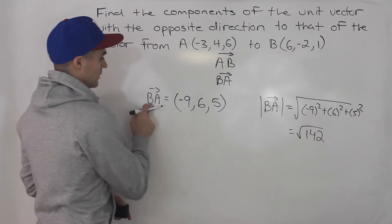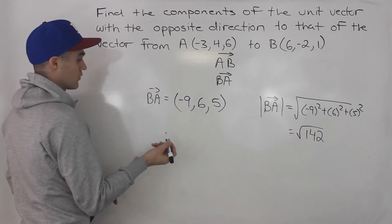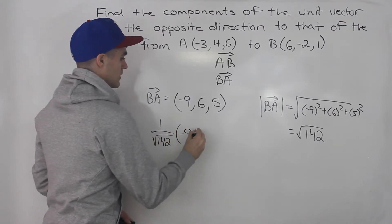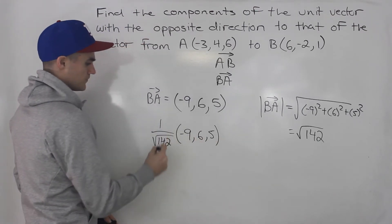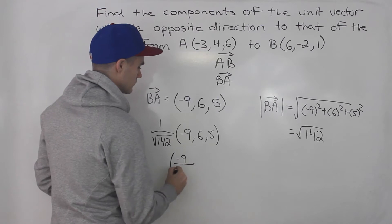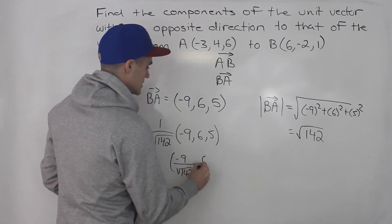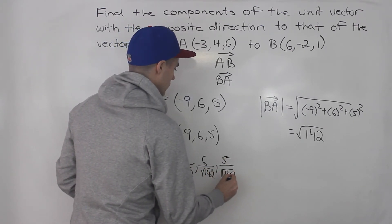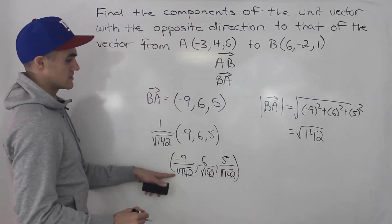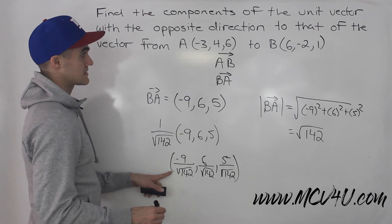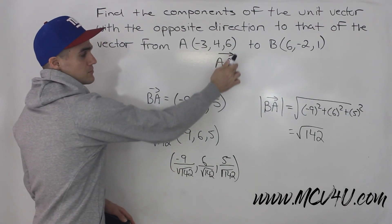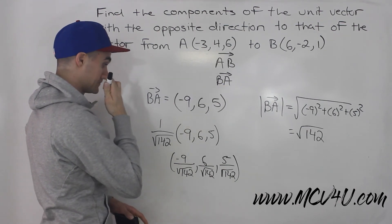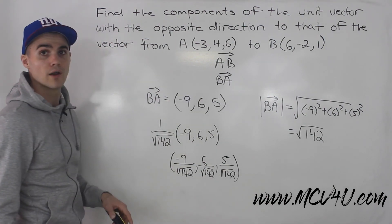So we multiply this vector by 1 over the magnitude — that is, 1 over root 142 — multiplied by these coordinates. When we distribute that, we get negative 9 over root 142, 6 over root 142, and 5 over root 142. Those are the components of the unit vector in the opposite direction of vector AB. We found the unit vector of BA by computing the magnitude and multiplying by 1 over that magnitude.